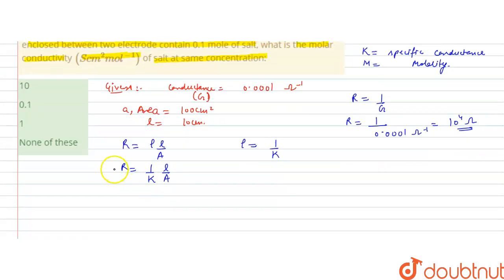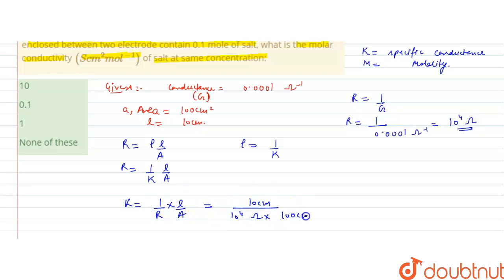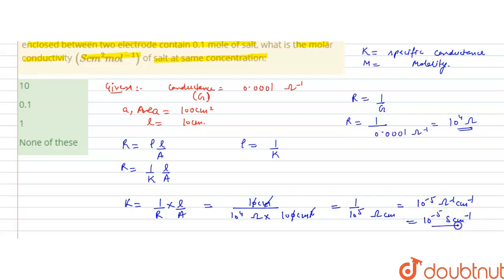We need to find K, the specific conductance: K = (1/R) × (L/A). With L = 10 cm, R = 10⁴ ohm, and A = 100 cm²: K = 10 / (10⁴ × 100) = 1 / 10⁵ = 10⁻⁵ ohm⁻¹ cm⁻¹. Since 1 ohm inverse equals 1 Siemen, K = 10⁻⁵ Siemens cm⁻¹.